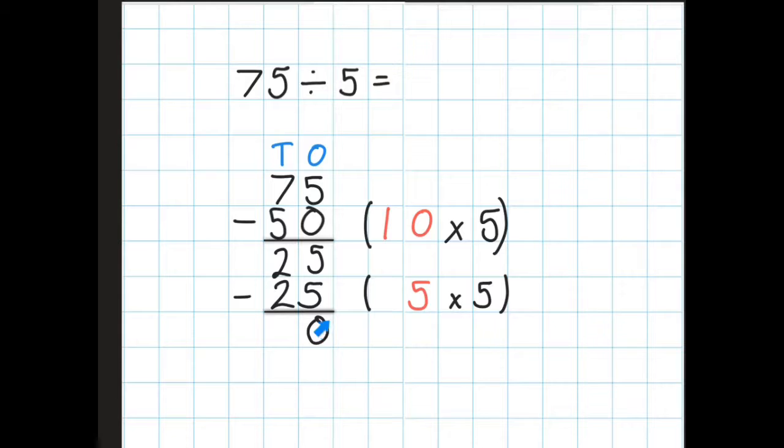Well I've taken all the chunks off. I've got nothing left. I started with 75 and I've got nothing left. First I took off 10 chunks of 5, then I took off 5 chunks of 5. So my final answer is 10 add 5 equals 15. So 75 divided by 5 is 15.